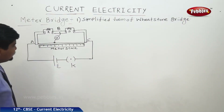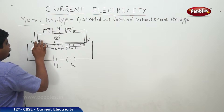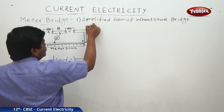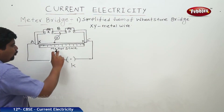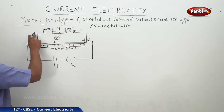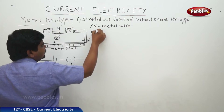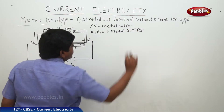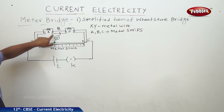The construction of the meter bridge is like this. From x to y, this x-y is the metal wire of one meter length. Now there are three metal strips — A, B, and C. One known resistance is connected in between the metal strips A to B, from the second end of A to the first end of B.